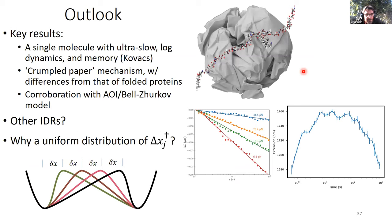So this is the last slide now. The results, again, quite striking ability to see bulk glassy dynamics, both logarithmic relaxation and the counterintuitive Kovacs effect, in a single chain that we explain with this crumpled paper mechanism that has some distinctions from the glassy dynamics known in folded proteins. And of course, we've corroborated our picture quantitatively with this AOI-Bell-Zurkov model.